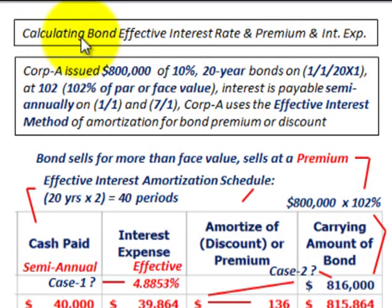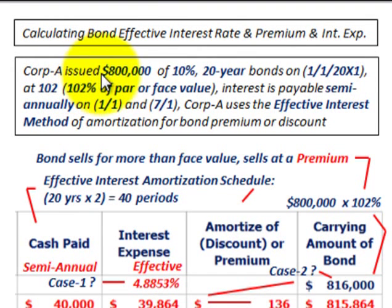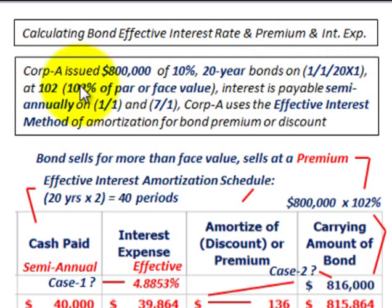What we're going to be looking at here is calculating the bond's effective interest rate, a premium on the bond, and also the interest expense on the bond. We're going to be using this example where Corporation A issues $800,000 worth of bonds at 10% — that's the face stated rate of interest on the bond. They're going to be 20-year bonds, issued on 1/1/20X1 at what they call 102, which really means 102% of the par value or the face value of the bonds.